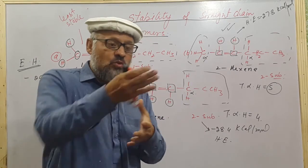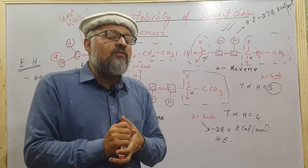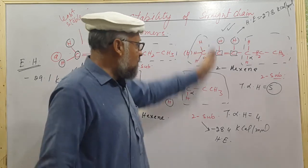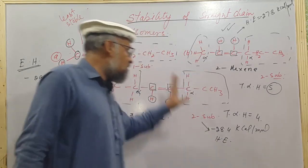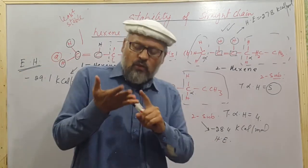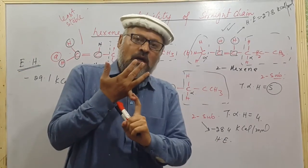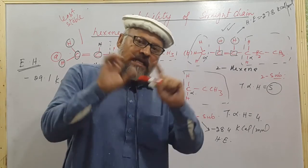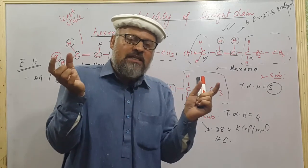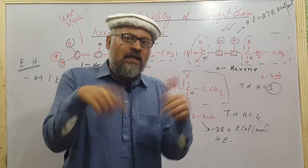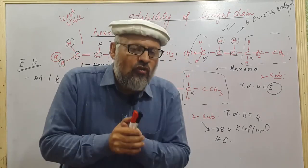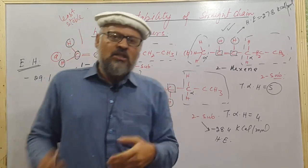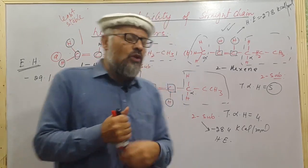This is confirmed by experimental values from the literature. To summarize: when compounds have the same number of alkyl groups around the double bond, you apply the second rule — count the alpha hydrogens. The compound with more alpha hydrogens is more stable.